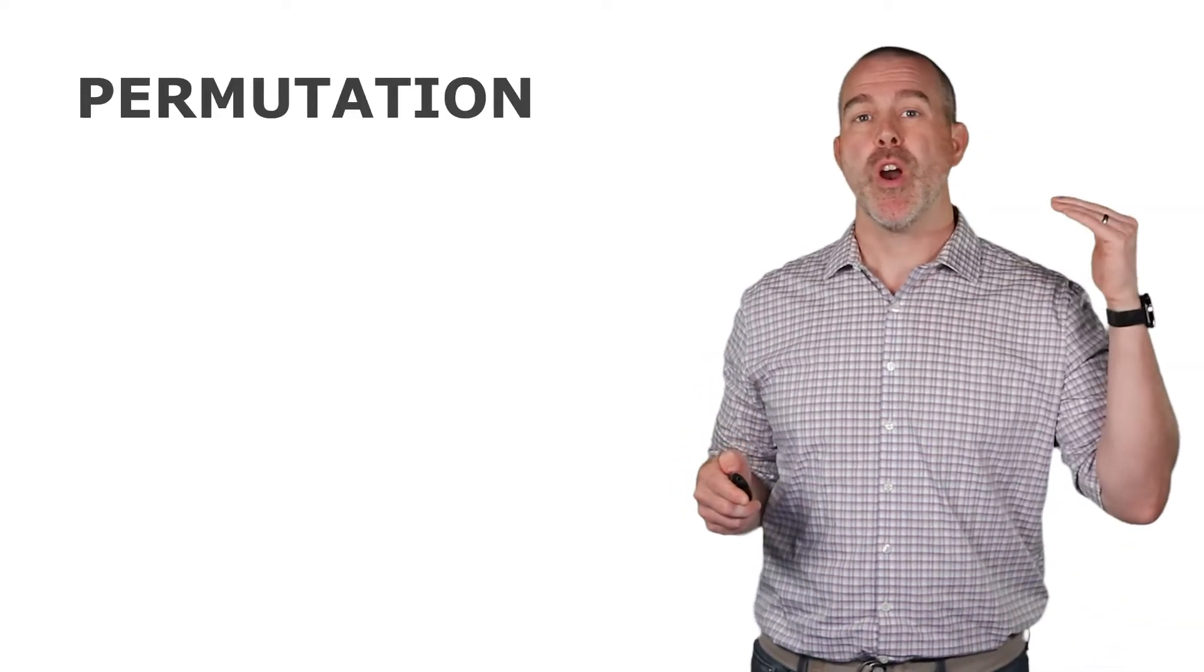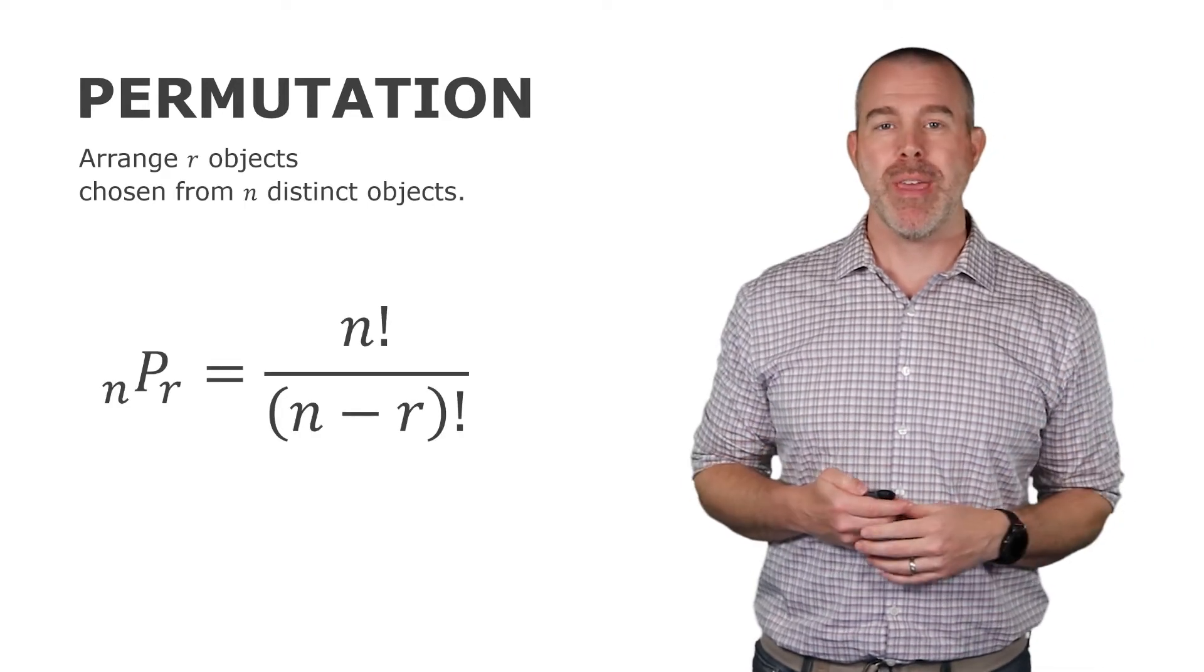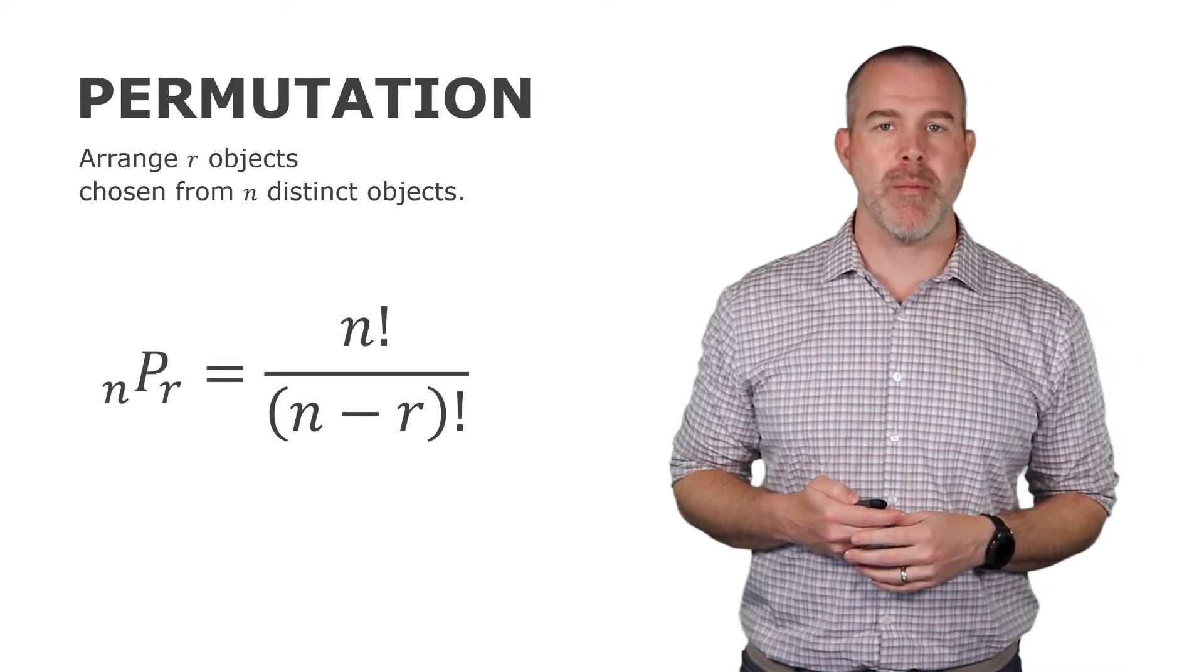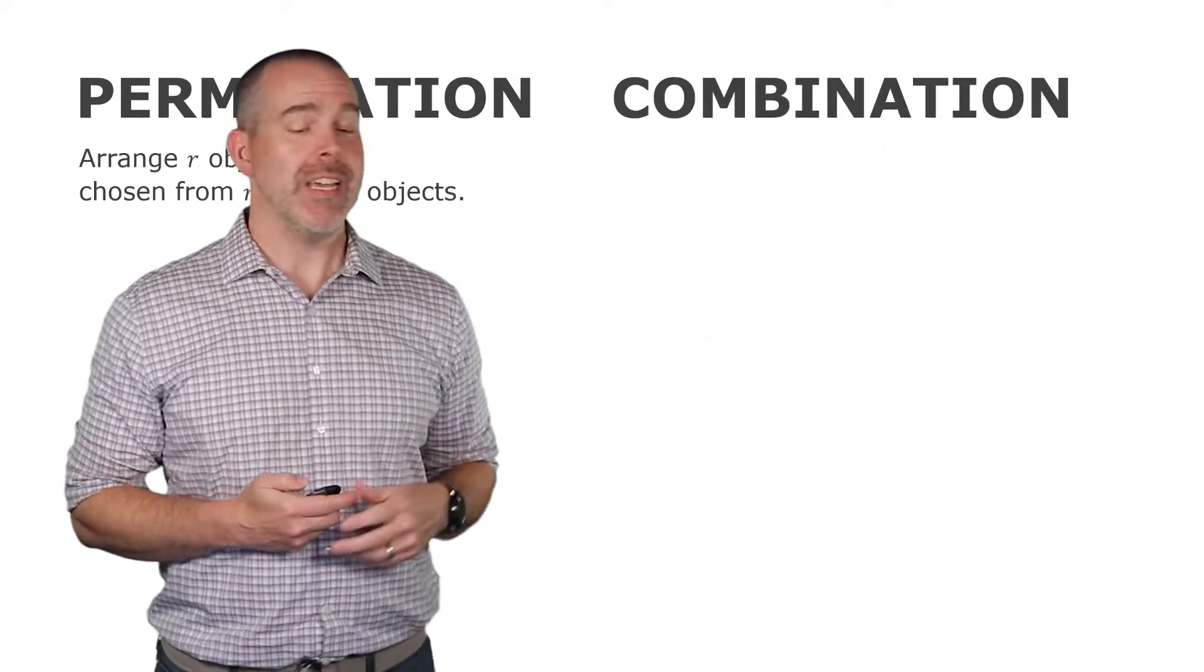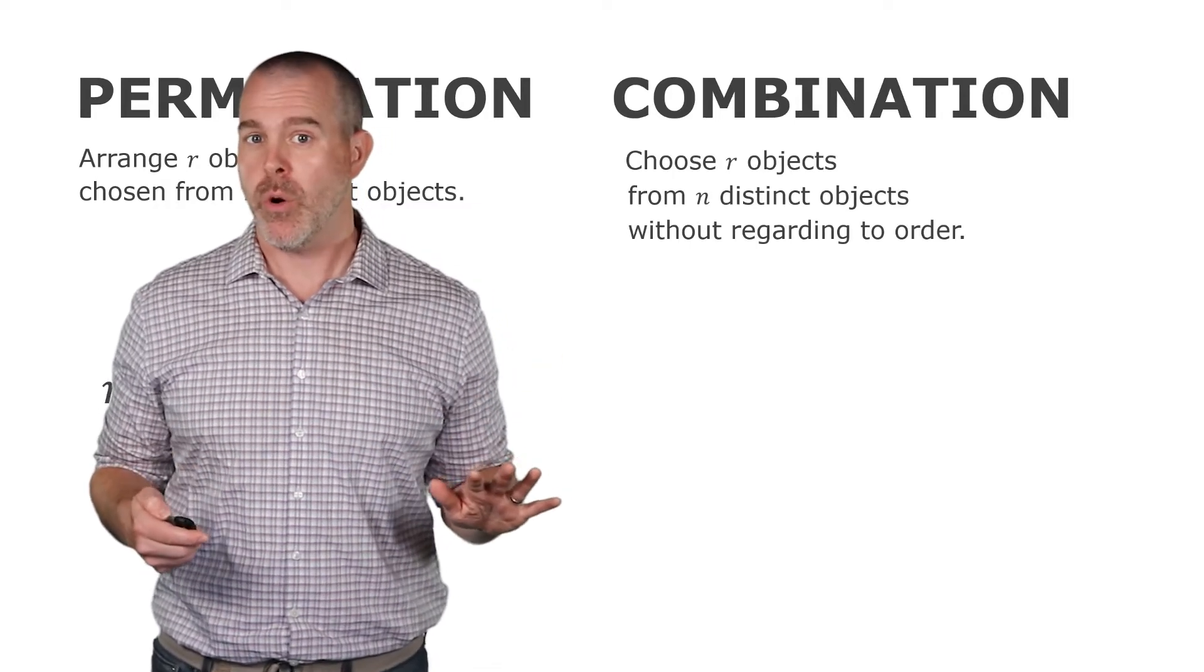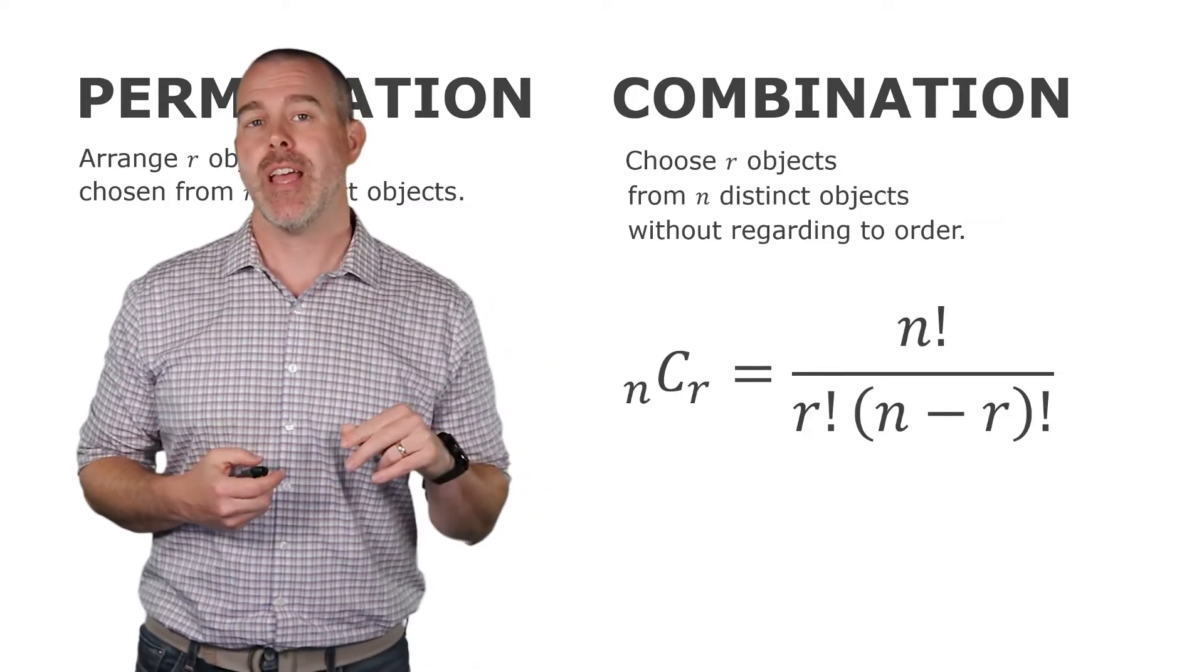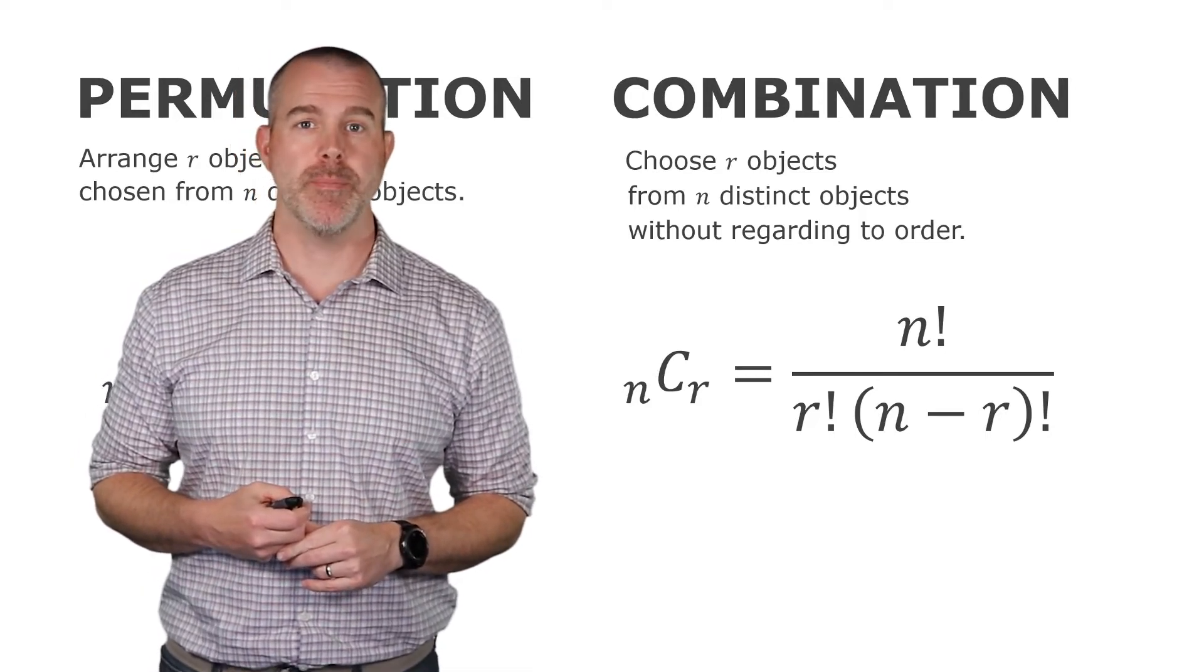So the two that we've done so far, permutation, this is when we're arranging r objects from n distinct objects. And we get nPr equals n factorial over n minus r factorial. And then combination, this one is we're choosing r objects from n without regard to order. This is nCr, that's n factorial over r factorial times n minus r factorial.